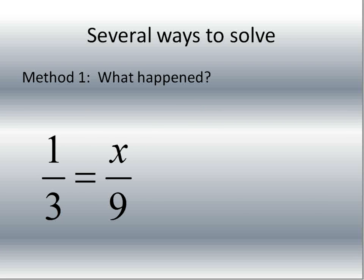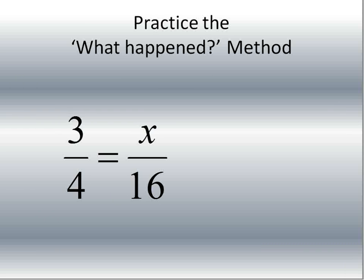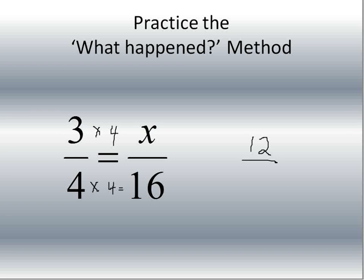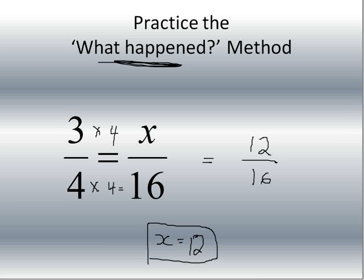Let's practice this method. We have three over four equals x over 16. Again, we look at what happened. What did I do to four to make it into 16? Four times four is 16. So I have to multiply the top times four and the bottom times four. Three times four is 12, four times four is 16. So my fraction is 12 over 16. In other words, x is equal to 12.